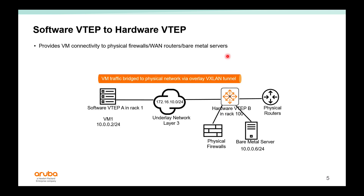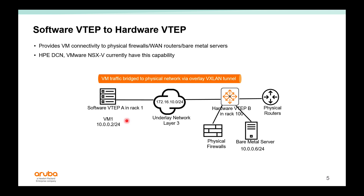In the software VTEP to hardware VTEP use case, a hypervisor on the left needs to communicate from the virtual world out to the physical world — such as a bare metal server, physical firewall, or physical routers. You can use a tunnel from the software VTEP that terminates to the hardware VTEP to provide connectivity. Examples of products capable of doing this are HPE Distributed Cloud Networking and VMware NSX.